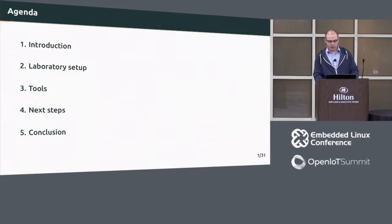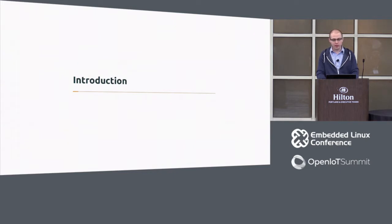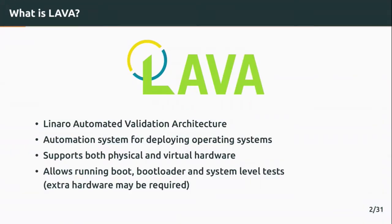In Tizen Common, release engineering requires a lot of validation and verification, performing tests on ready-to-use images of the GNU Linux distribution. The acronym LAVA stands for Linear Automated Validation Architecture and it's a system for automated deployments of operating systems, which in our case is crucial for day-to-day work.